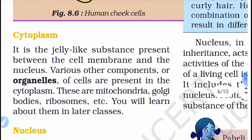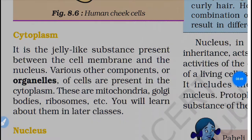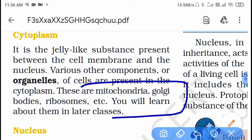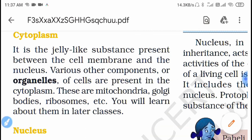Cytoplasm is the jelly-like substance present between the cell membrane and the nucleus. Various other components, called organelles, of cells are present in the cytoplasm. These include mitochondria, Golgi bodies, ribosomes, etc. You will learn about them in detail in later classes.